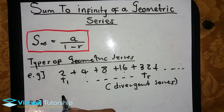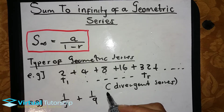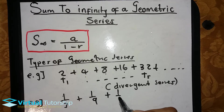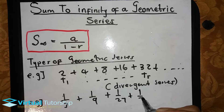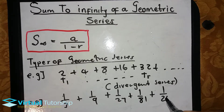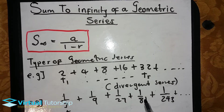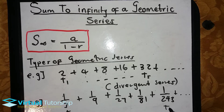Another one — let's say maybe it's 1 over 3, 1 over 9, 1 over 27, 1 over 81. This is a geometric series all the way up to infinity, T1 all the way up to T5.